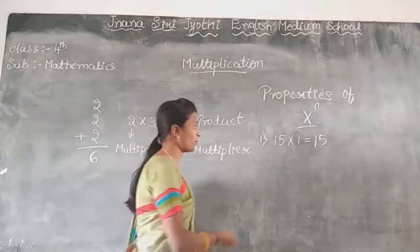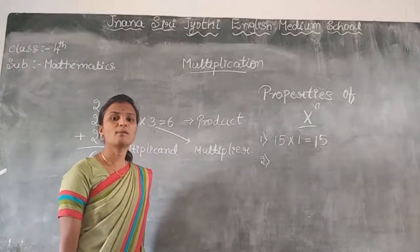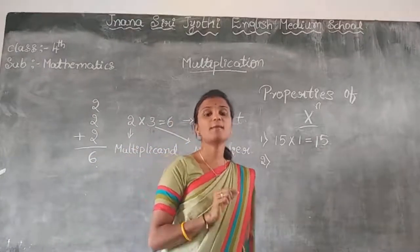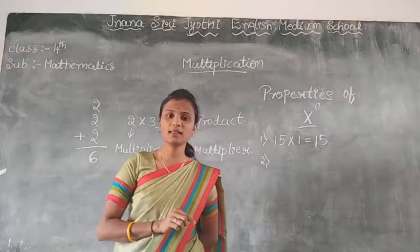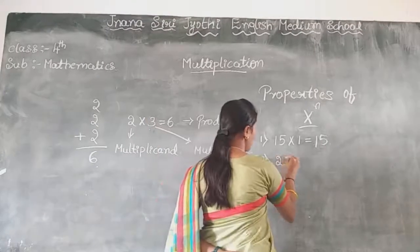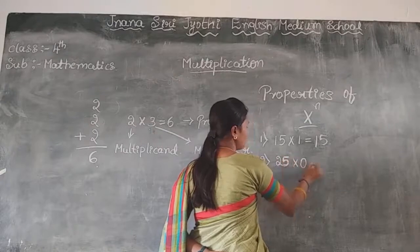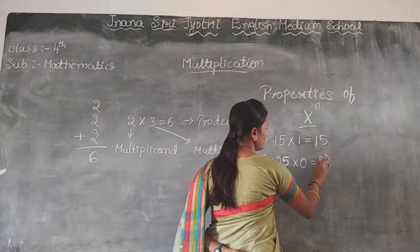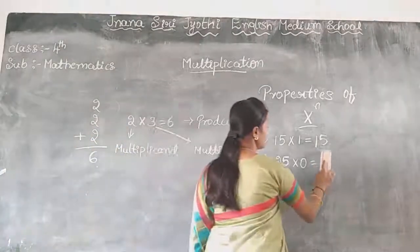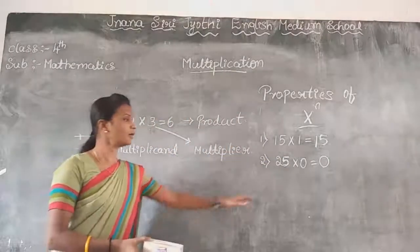The second property is: if any number is multiplied by 0, then the product will be 0. For example, 25 into 0 gives the product as 0. This is the second property.